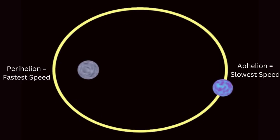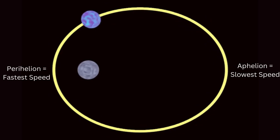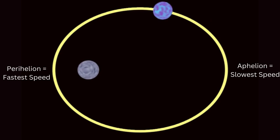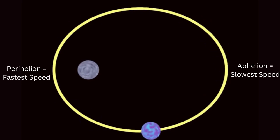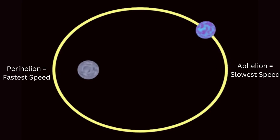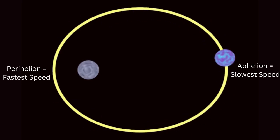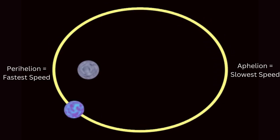We will start with absides, which is just a fancy name for when the body is closest to or farthest away from the sun or earth. Closest to the sun is called perihelion; farthest away is aphelion. Closest to earth is perigee and farthest is apogee. Notice that the body's speed is highest near perihelion and slowest at aphelion. Due to inertia, the speed will actually keep increasing a few days beyond the perihelion point.